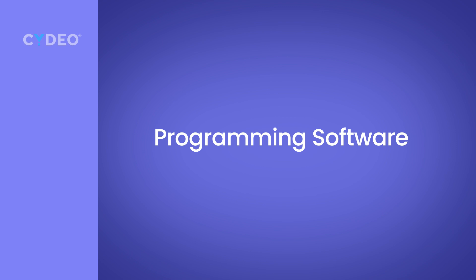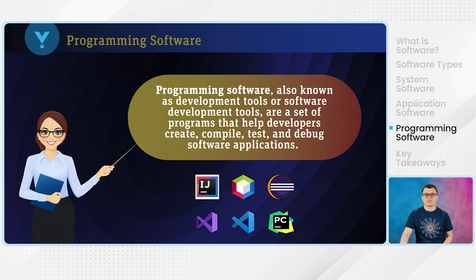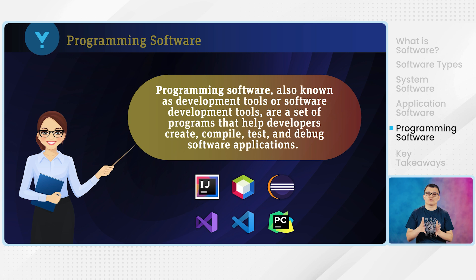The last type of software is programming software, also known as development tools or software development tools. These are used to help developers and programmers write code to create applications. These tools typically include an Integrated Development Environment, or IDE, which stands for Integrated Development Environment, and includes a compiler, debugger, and other software development utilities — which you will learn when we start Java programming.